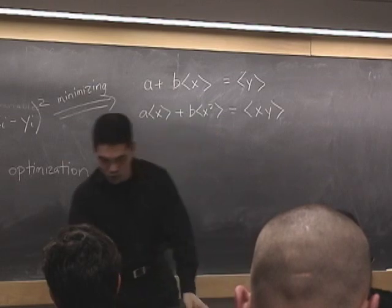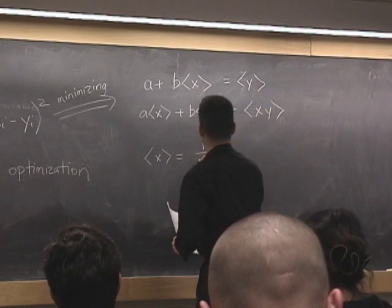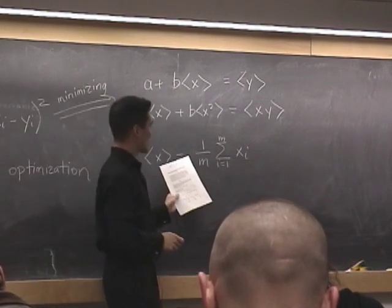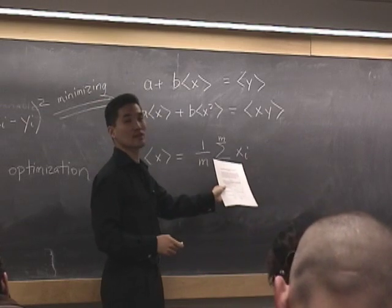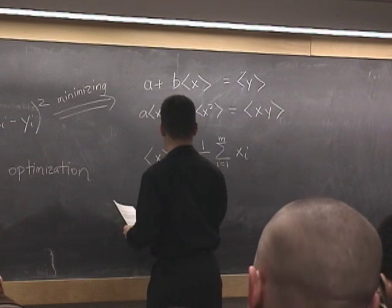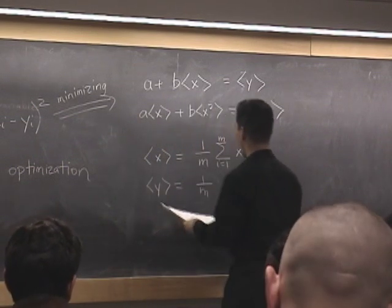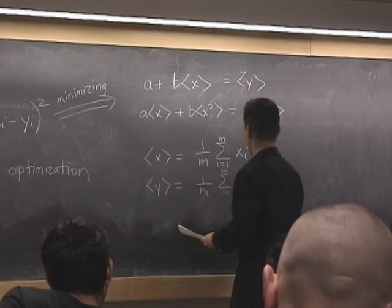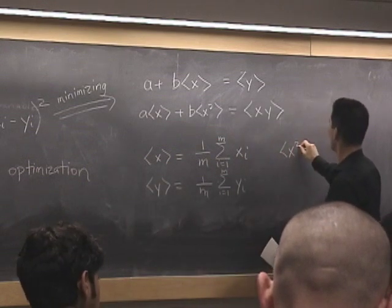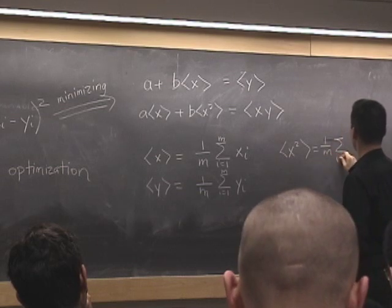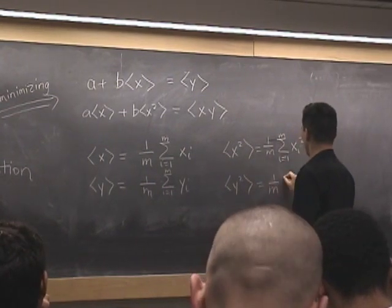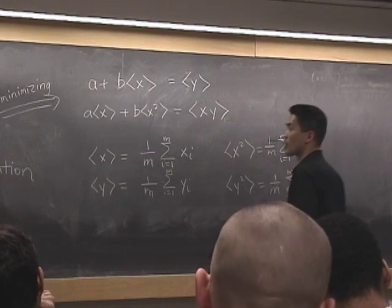And so x in angle brackets is representing the mean, the sample mean of xi. So we just add up all the x's and we divide by the number of the data points, m. And similarly, y in angle brackets is given by that.